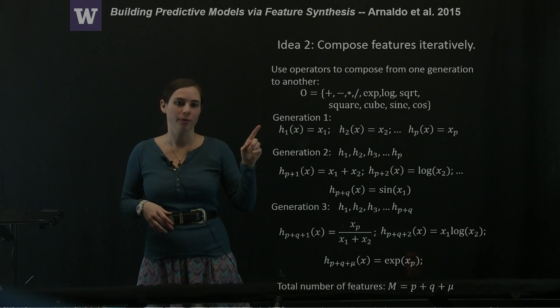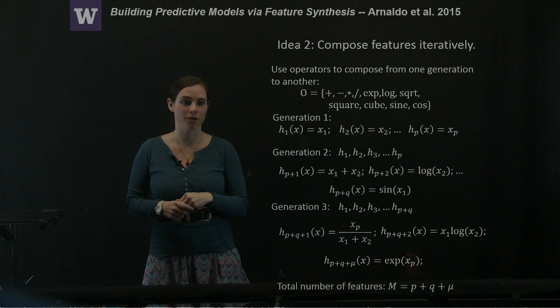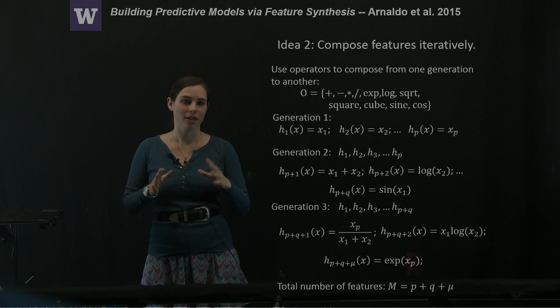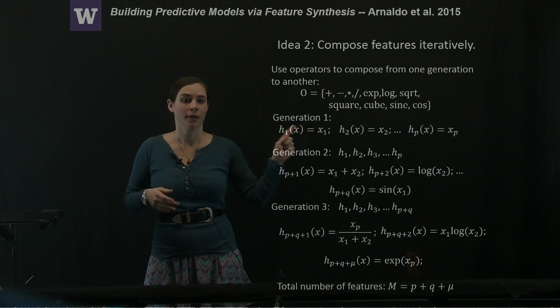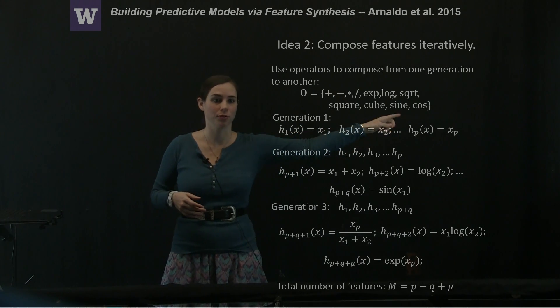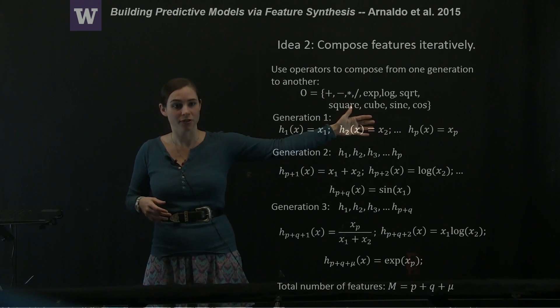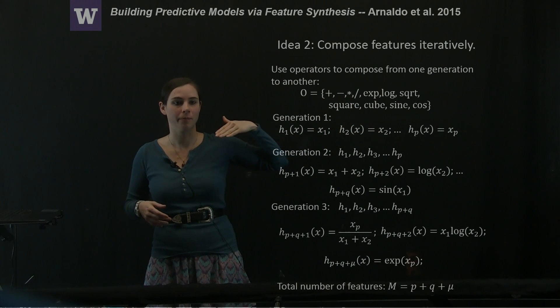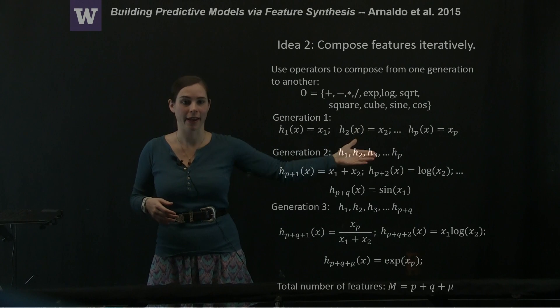Then they start with their generation one features. The generation one features are just each of their measured variables, the linear form of them. So x1, x2, out to however many measured variables they have, xp.